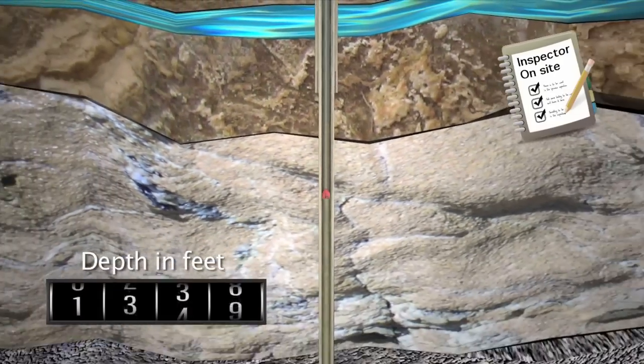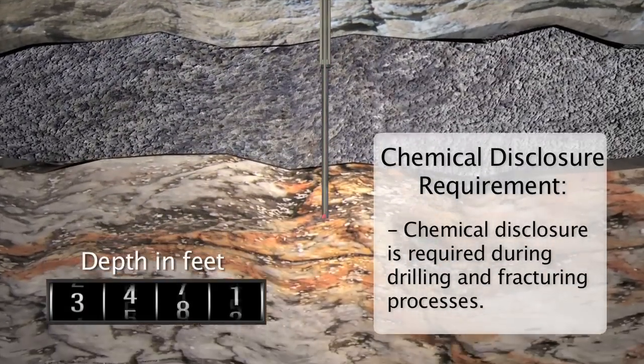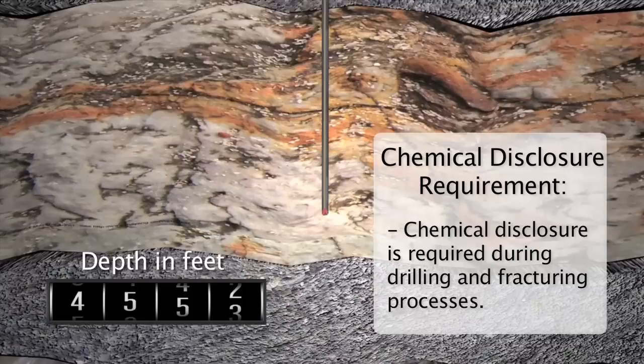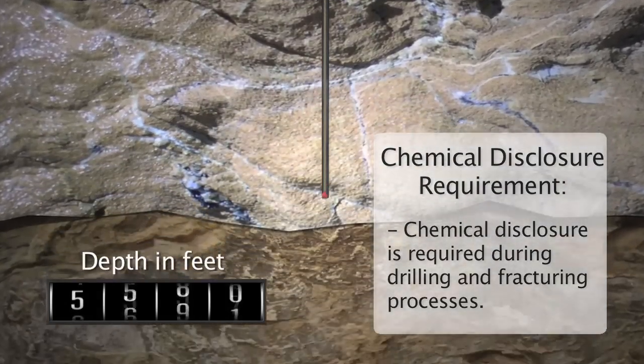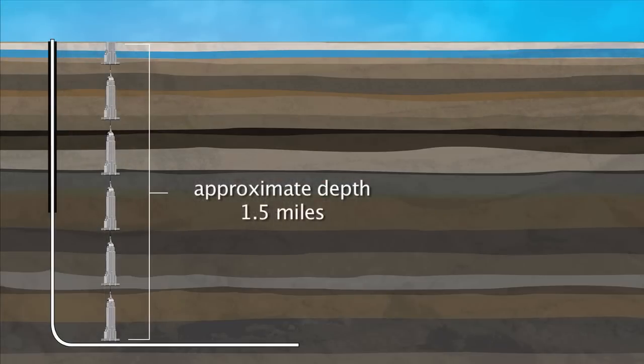Once inspectors determine that the casings have been properly set to protect the groundwater aquifers, drilling can continue. The completed well will be drilled up to one and a half miles below the ground surface. This distance is equal to nearly five and a half Empire State Buildings stacked on top of one another.